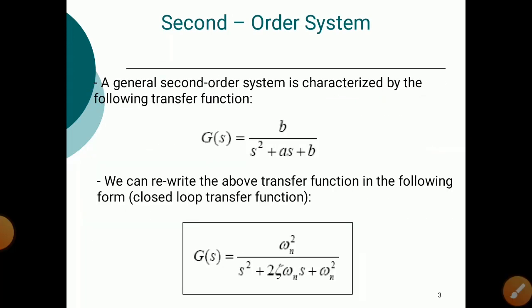A general second order system is characterized by the following transfer function. The numerator has b and the denominator has s² + as + b. This transfer function is in the form of the s-domain: G(s) = b / (s² + as + b). It is called s-plane or s-domain analysis.